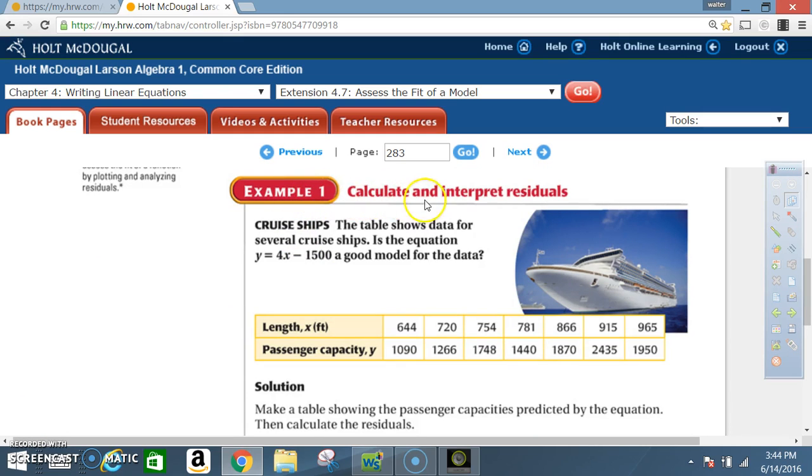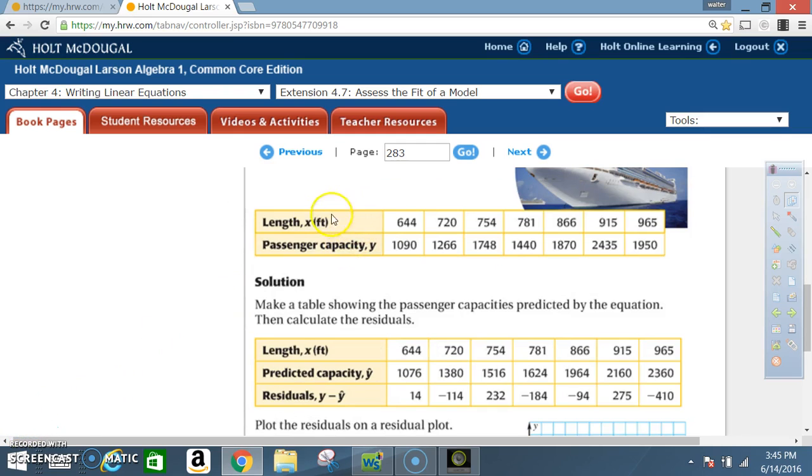Example 1: Calculate and interpret residuals. The table shows data for several cruise ships. Is the equation y equals 4x minus 1500 a good model for the data? Here's our table - length is our x values, passenger capacity is our y values.